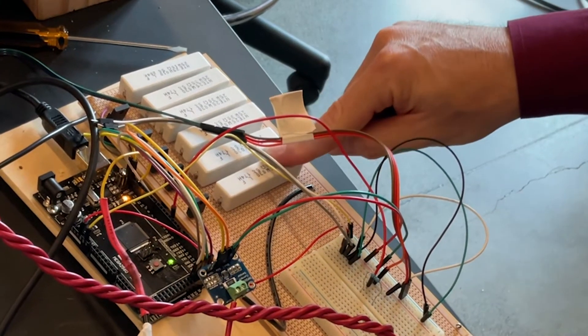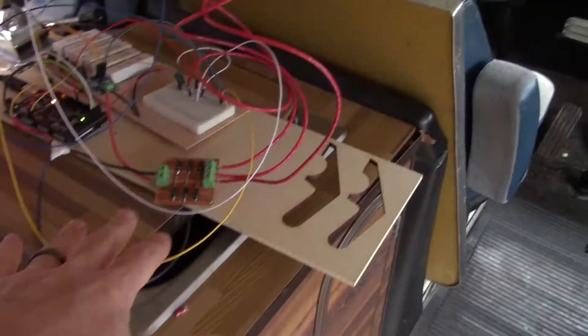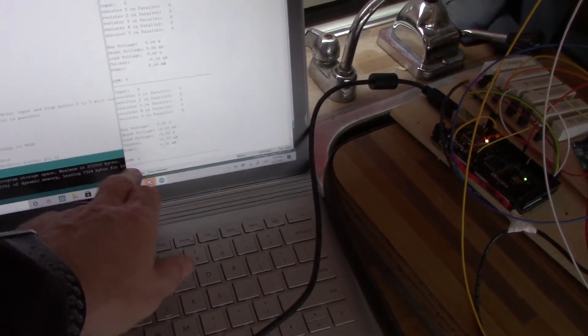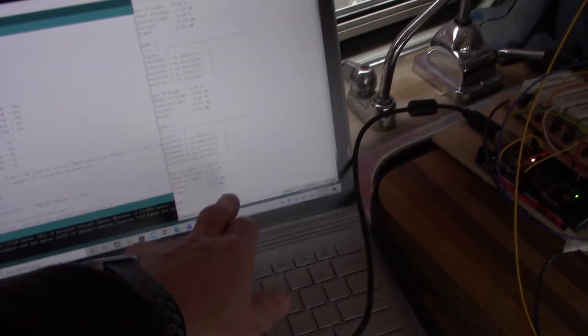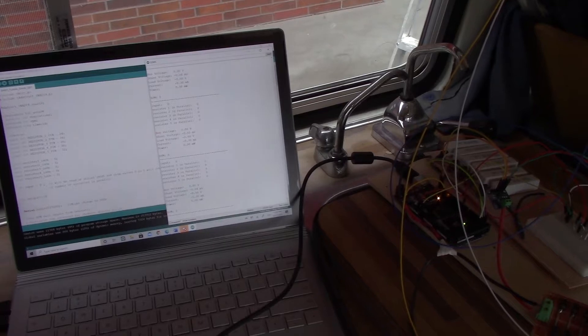What that has inside of it is a number of different resistors that are arrayed in parallel next to each other, and we can turn on and off however many. We can change the overall resistance value that the circuit sees, which changes the current and a number of other values.